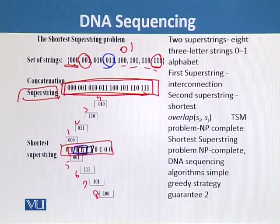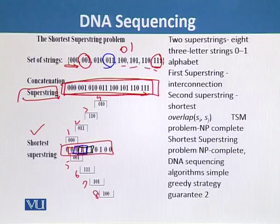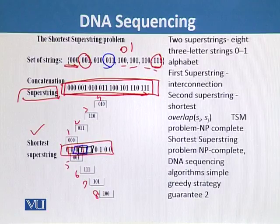The shortest superstring in this case represents a solution to the clever thief problem — it is the minimum string of tests a thief has to conduct to try all possible K-letter passwords for a combination lock.